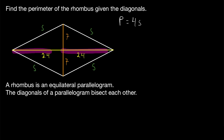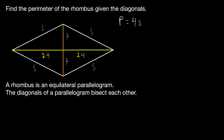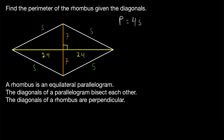Since we know these diagonals bisect each other, we can make our final conclusion that will lead us to our answer very quickly. Consider these two triangles — they are congruent by Side-Side-Side: this side is congruent to this, this side is congruent to itself, and these sides are congruent. So these two triangles are congruent. Also, these two angles are supplementary. Since they're supplementary and congruent, these are both right angles with a measure of 90 degrees. We've just proven that the diagonals of a rhombus are perpendicular — they intersect at a right angle.